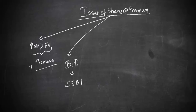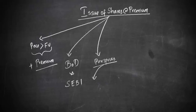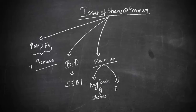Now, for what purposes can this premium be used? Number one, the premium can be used for buyback of shares. If the company wants to buy back its shares from the shareholders, it needs resources, and for that the premium can be used. Number two, it can be used for issuing bonus shares.